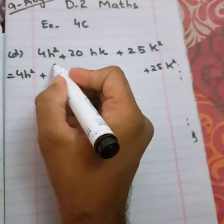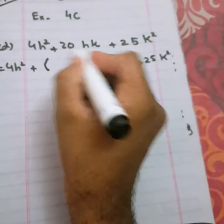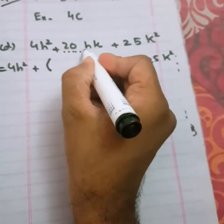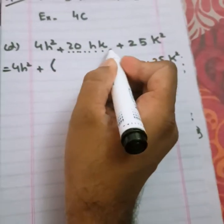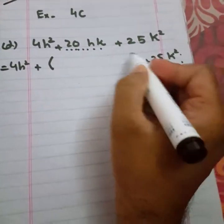Don't put the dotted signs like I did. Put brackets here. Whatever sign is here, either plus or minus, you should place it here. I will do the umbrella method which I taught you in my previous lecture.